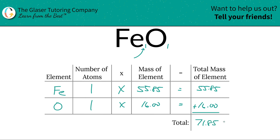Since we're solving for molar mass, the units here are in grams per mole. That's all there is to it. Thanks for tuning in. Now you know how to find the molar mass of iron 2 oxide. I'll see you in the next video. Take care.